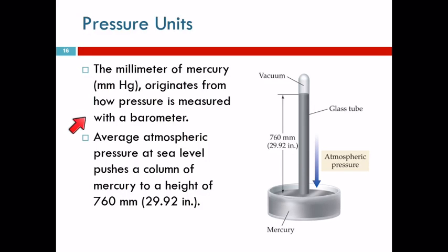A millimeter of mercury comes from the original types of barometers. So there was a glass tube completely full of mercury, and then you invert it into a dish of mercury. Some of the mercury will come out, but atmospheric pressure will support a column of mercury that's 760 millimeters tall, or 29.92 inches.